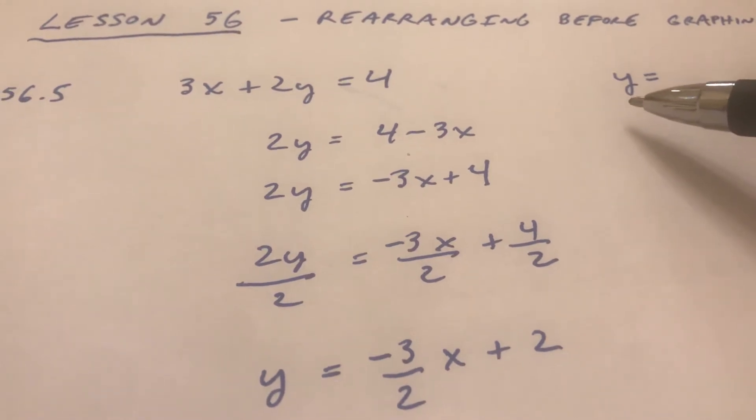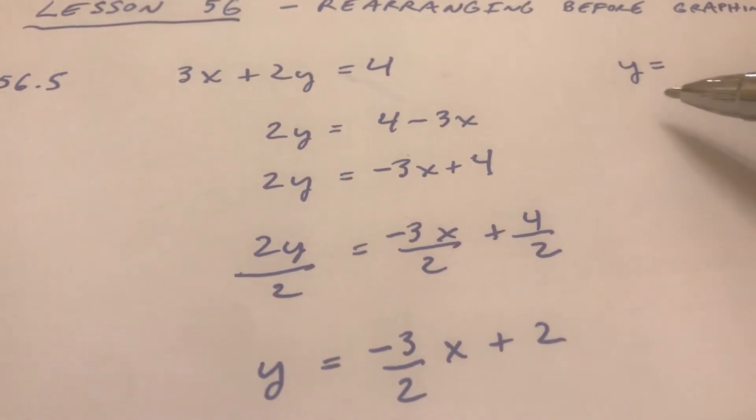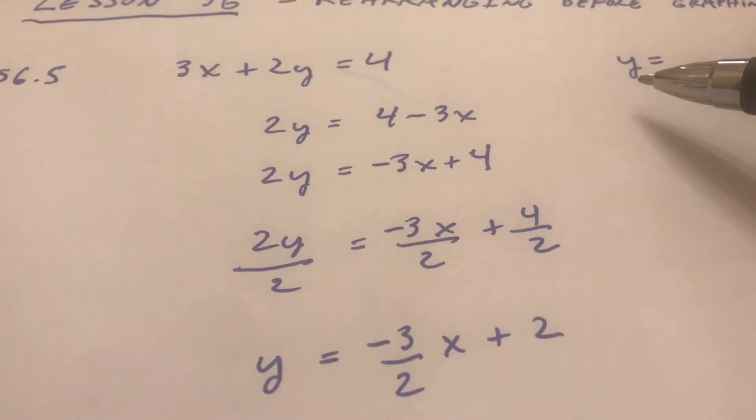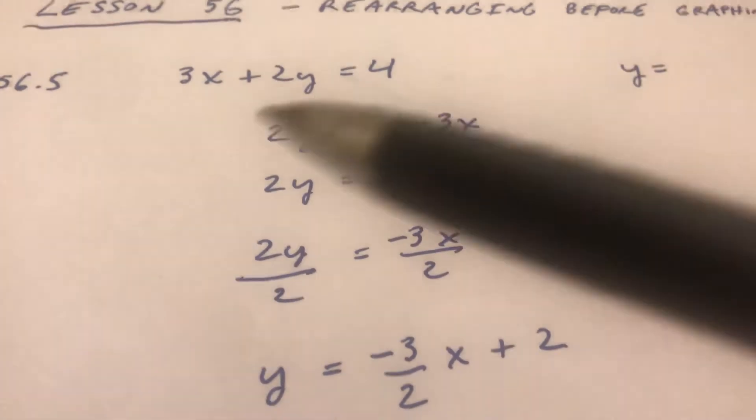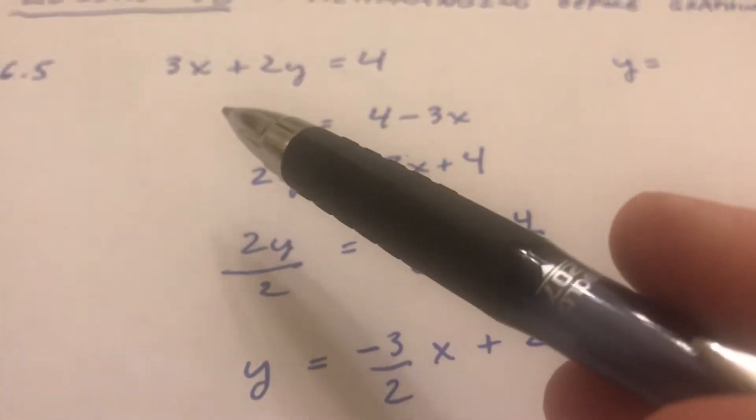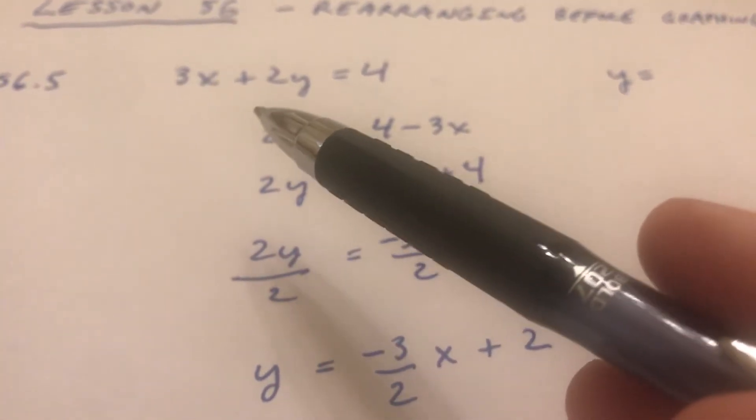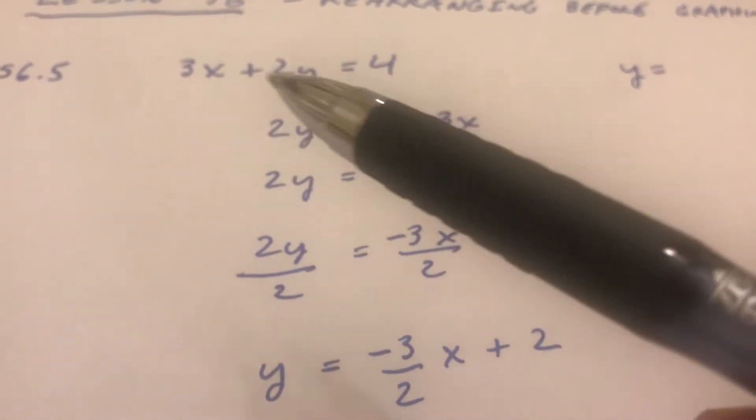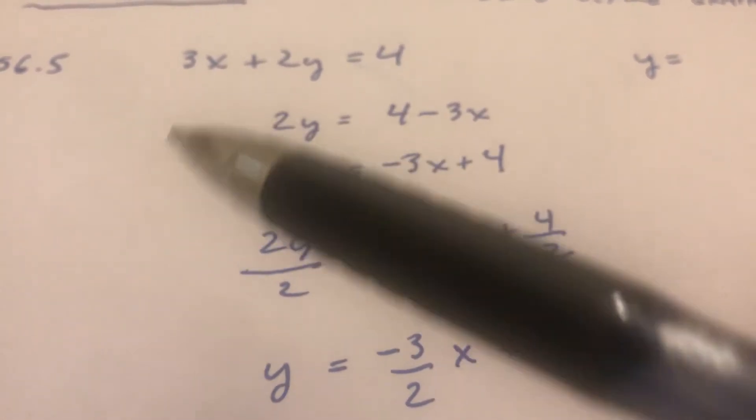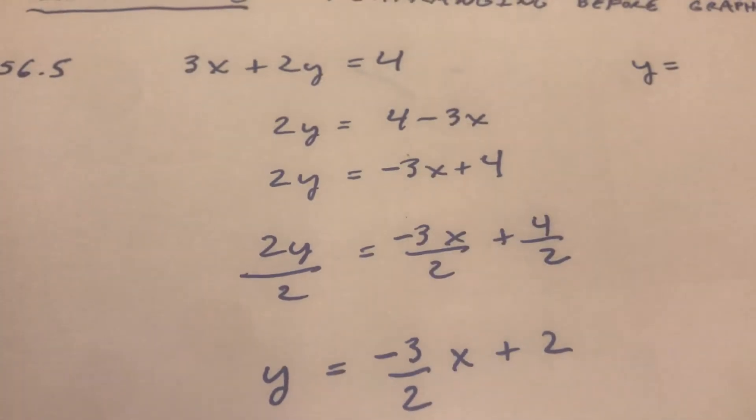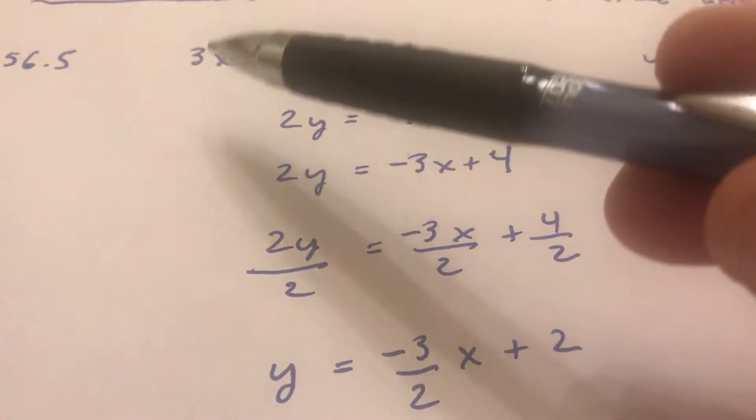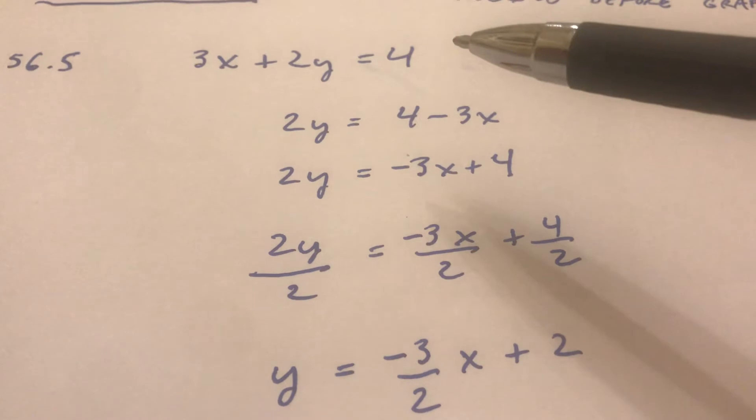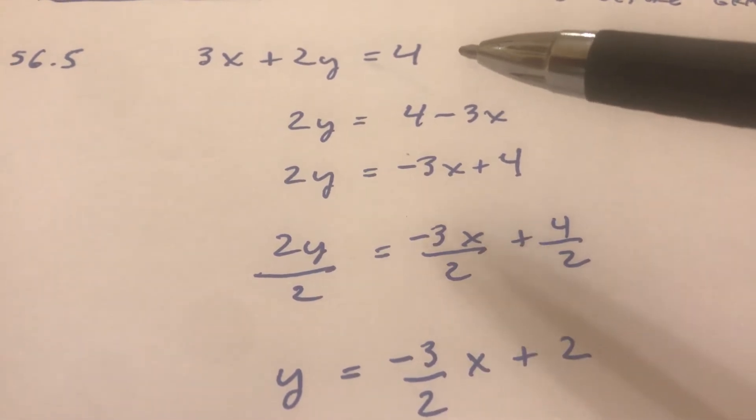See how that's just y there? It could be on the right side but it's more common that y is on the left side. You can see y isn't by itself here. You have a 3x and a plus and a 2y. The first thing I'm going to do is subtract 3x from both sides and when I subtract 3x from both sides it disappears from this side - 3x minus 3x is zero - and it becomes minus 3x over here.